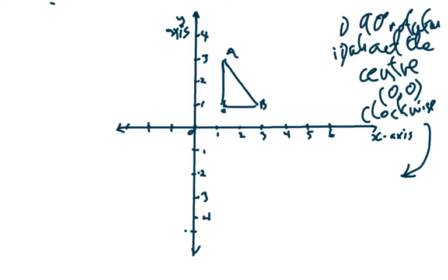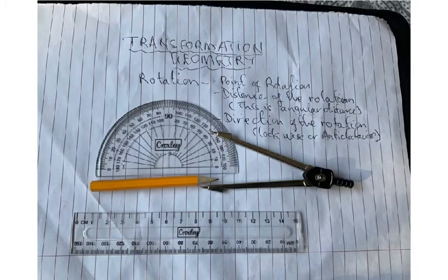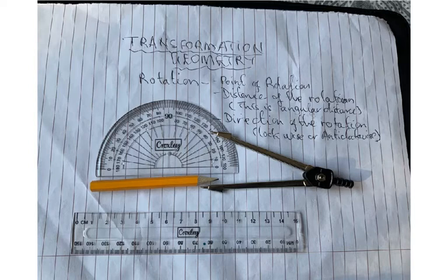These are very important instruments that any teacher teaching transformation must have. The ruler is important because you need to draw the Cartesian system with correct dimensions. You also must have a protractor, which will be very important. And you have a divider, which is going to help you mark the angle. Of course, you will also need a pencil.